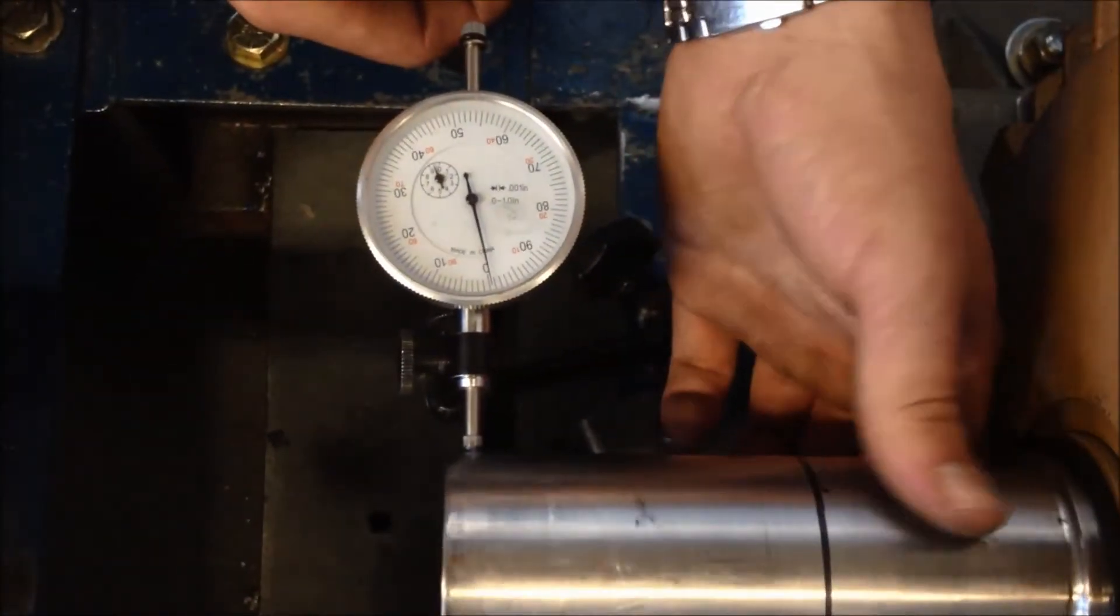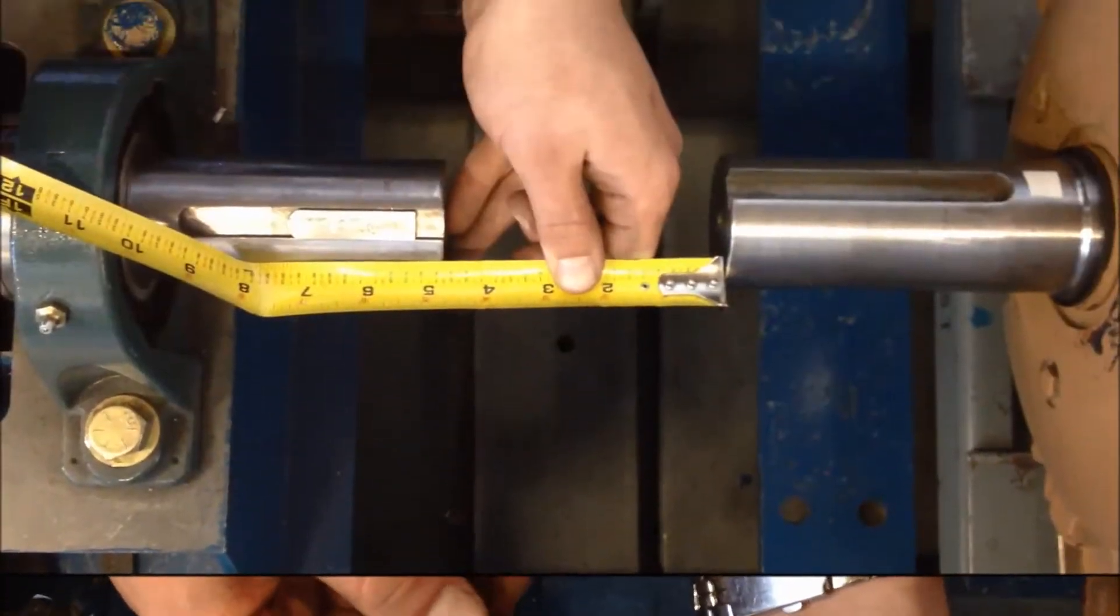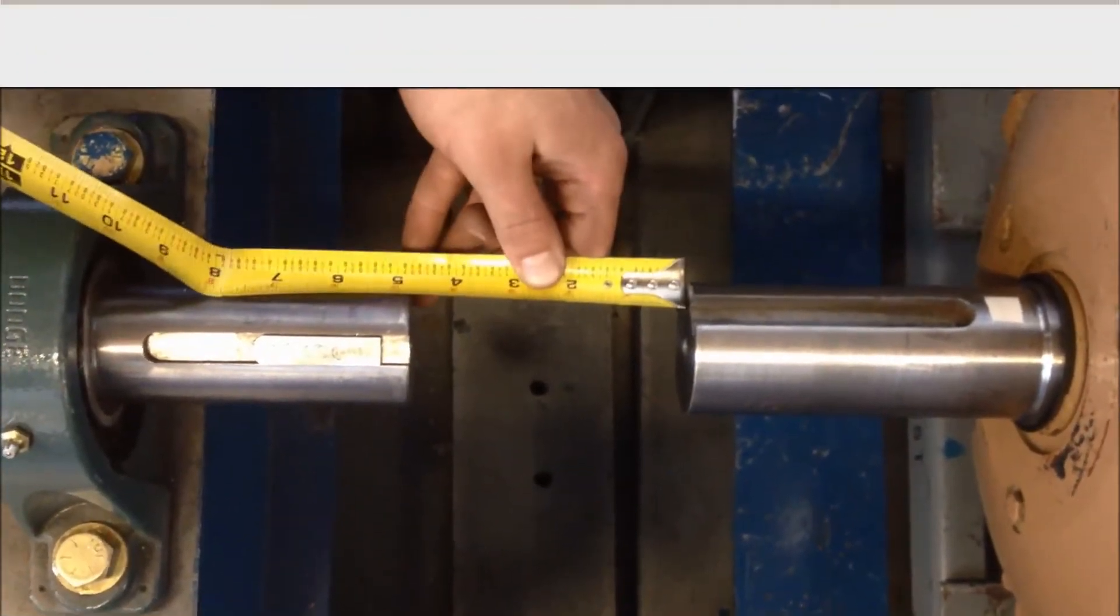Measure the distance between shaft ends. To install the coupling without moving the motor, 4.5 to 5 inches is required when using a 1 inch hub spacer.